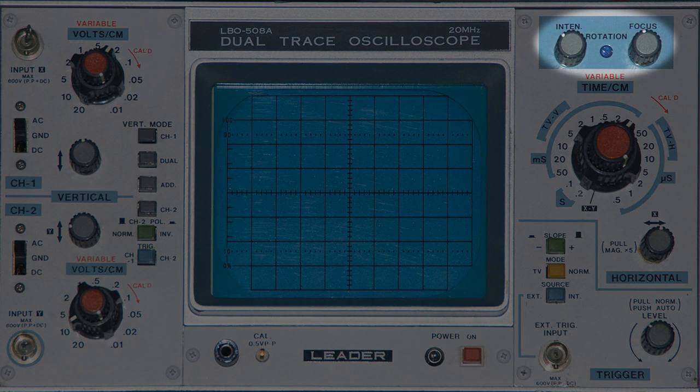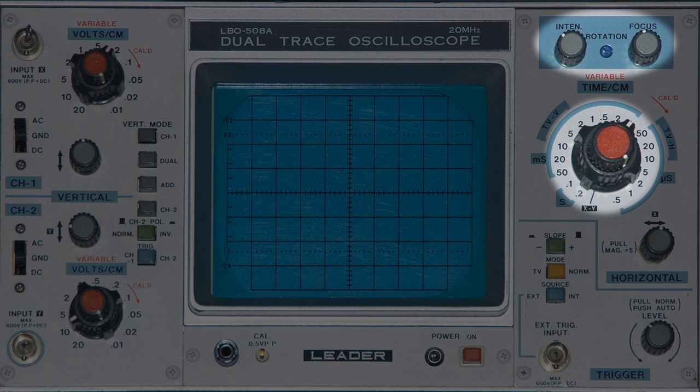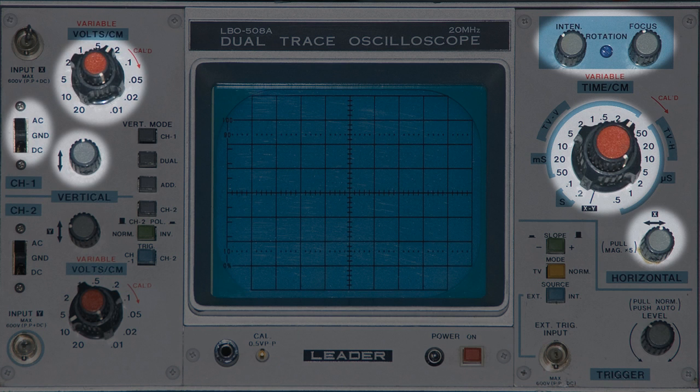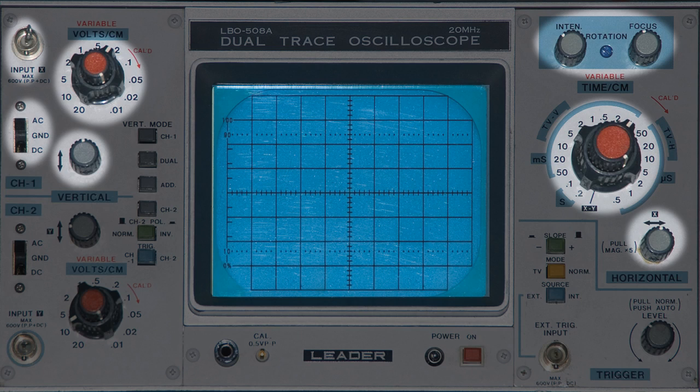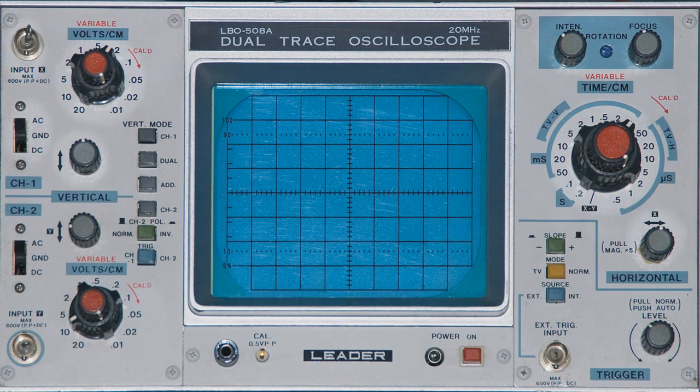Here is the intensity and focus control, the horizontal time base, horizontal position, vertical position, AC DC switch, vertical gain, input, vertical input, and of course the screen. And these are the items that I use all the time when I'm using an oscilloscope.